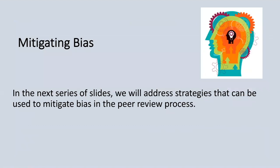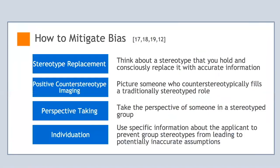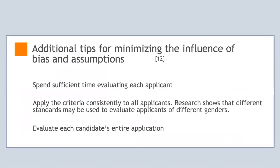In the next few slides, we'll address strategies that can be used to mitigate bias. The following steps are evidence-based behavioral strategies that can be practiced while reading an application to mitigate bias in the peer review process. Think about a stereotype that you hold and consciously replace it with accurate information. Positive counter-stereotype imaging: picture someone who counter-fills a traditionally stereotyped role. Perspective taking: take the perspective of someone in a stereotyped group.